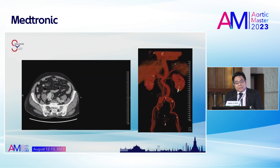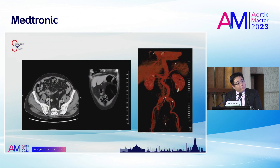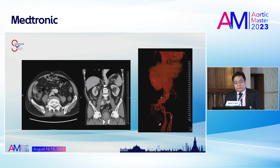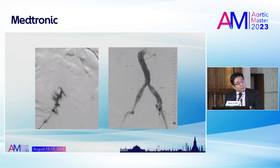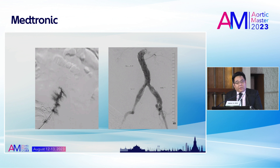Another situation: this case had very, very tortuous external iliac artery — curved like a circle. When I performed the puncture, inserted the guidewire, and inserted the first six French sheath, the patient developed a hematoma at the access site and hypotension. At that point, I had to perform an open cutdown and repair of the access site.